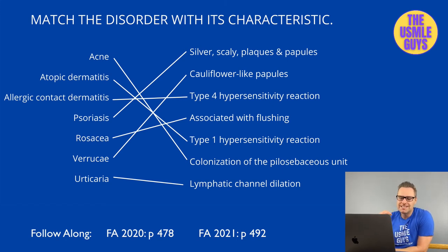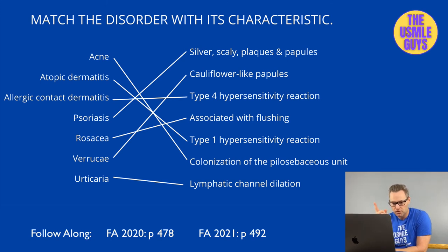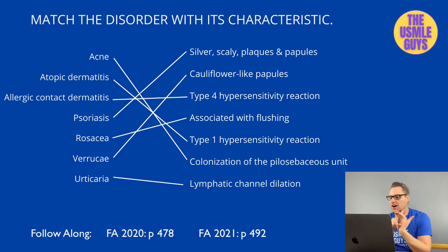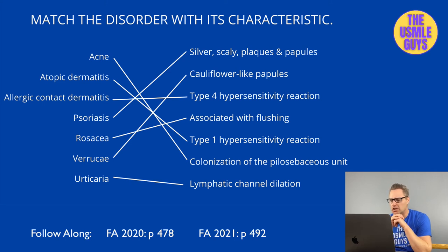Rosacea is an inflammatory facial skin disorder characterized by erythematous papules and pustules. Unlike acne, there are no comedones in rosacea. It's often associated with flushing of the face in response to external stimuli — most often alcohol. Verruca are warts caused by non-cancerous HPV strains. They are tan-colored, soft, and described as cauliflower-like. Microscopically, you'll see epidermal hyperplasia, hyperkeratosis, and koilocytosis.